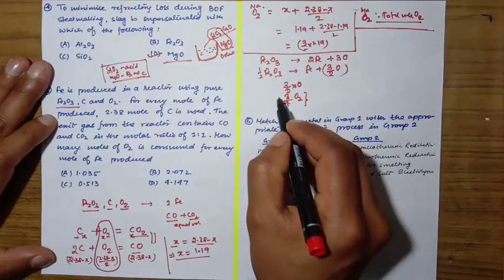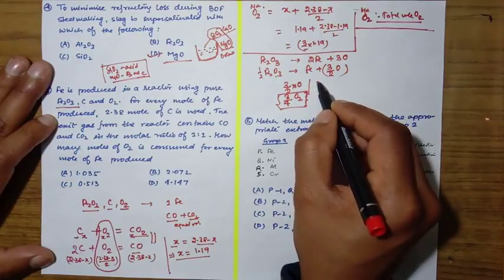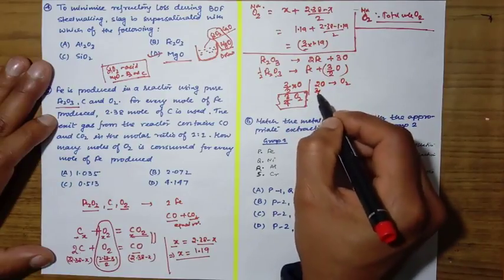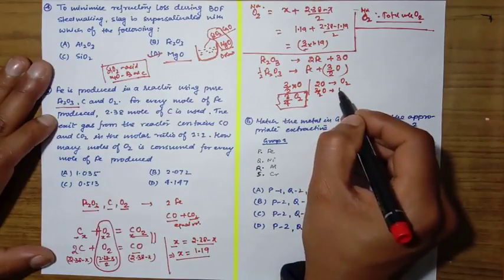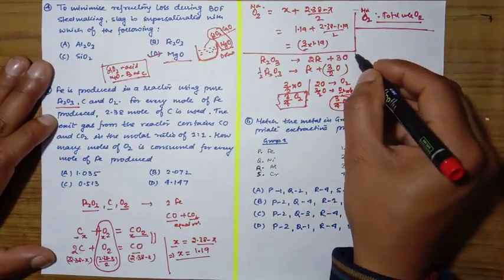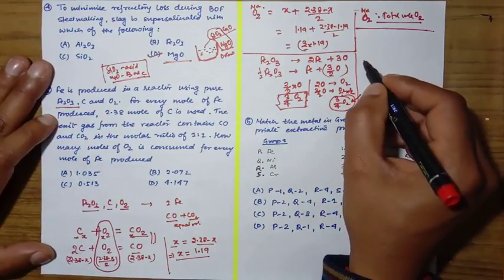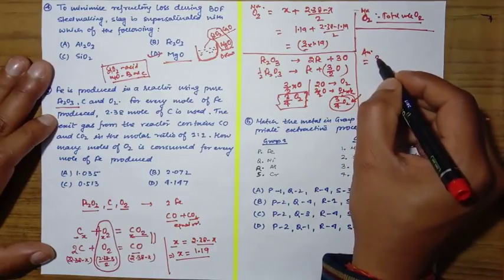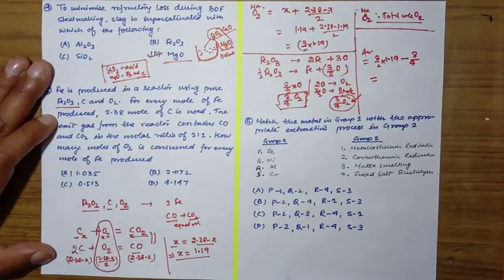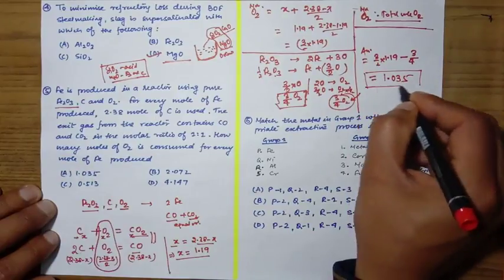Two moles of nascent oxygen gives 1 mole of O2, so 3/2 moles of nascent oxygen gives (1/2) × (3/2) = 3/4 moles of O2. We need to subtract this 3/4 moles, so the answer will be (3/2) × 1.19 minus 3/4, which comes to around 1.035. This is the correct answer.